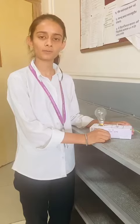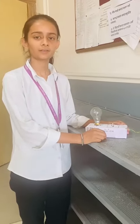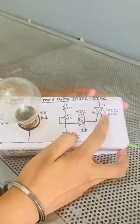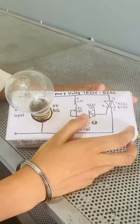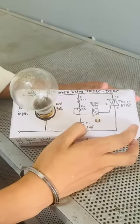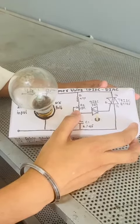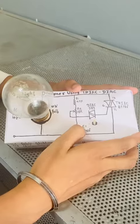Today I am going to present our micro project on topic Light Dimmer using DIAC and TRIAC. In this circuit we use the TRIAC BT-136 and the DIAC which is DB3, capacitor of 0.1 microfarad, and the potentiometer which is 10 kilo ohm and the resistor which is 4.7 kilo ohm.